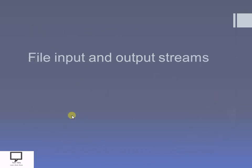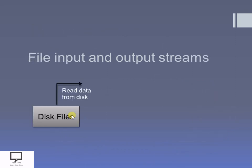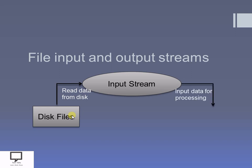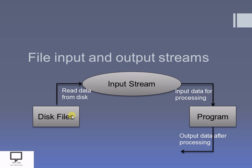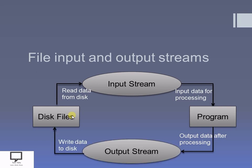This process is performed repeatedly: from the disk file, read data with the help of the input stream, send it for processing, then write the processed data with the help of the output stream back to the disk file. So this is the file input and output stream cycle — reading data, processing, and writing data — performed with input and output streams respectively. These are the two main operations we perform on a file using file handling.